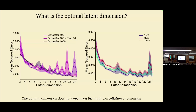One might wonder if UWS patients, with potentially simpler dynamics, would need a smaller latent dimension. But when I compute the MSE for each group — controls, MCS, and UWS — it makes no difference. The elbow is somewhere around 13 to 16 dimensions for all groups, consistent with similar analyses on different datasets by colleagues, always finding the same order of magnitude.